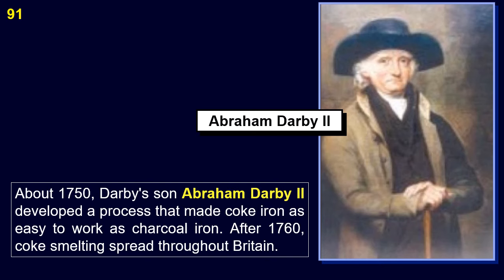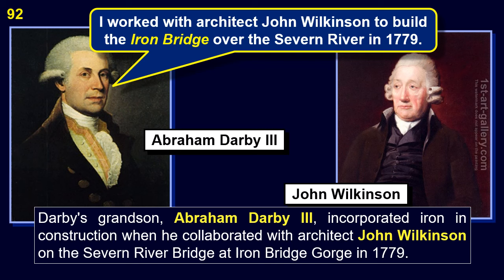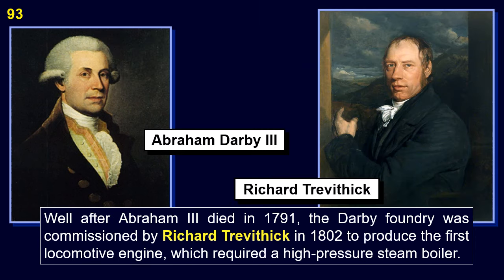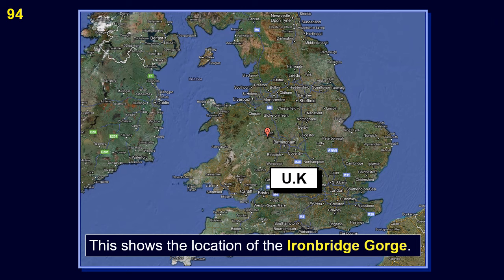About 1750, Darby's son Abraham Darby II developed a process that made coke iron as easy to work as charcoal iron. After 1760, coke smelting spread throughout Britain. Darby's son Abraham Darby III incorporated iron in construction when he collaborated with architect John Wilkinson on the Severn River Bridge at Iron Bridge Gorge in 1779. Well after Abraham III died in 1791, the Darby Foundry was commissioned by Richard Trevithick in 1802 to produce the first locomotive engine, which required a high-pressure steam boiler. This shows the location of the Iron Bridge Gorge.